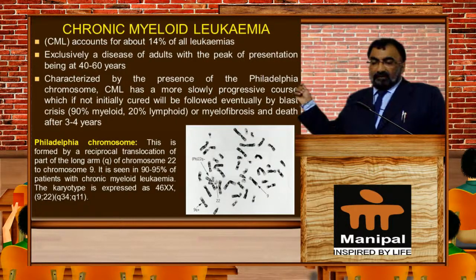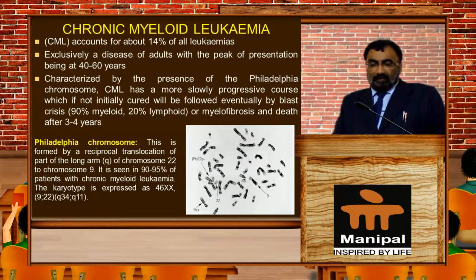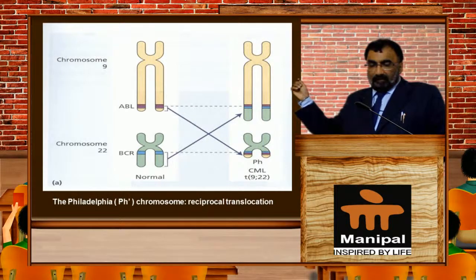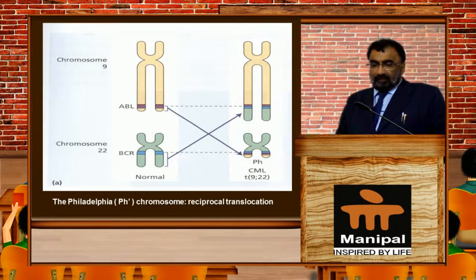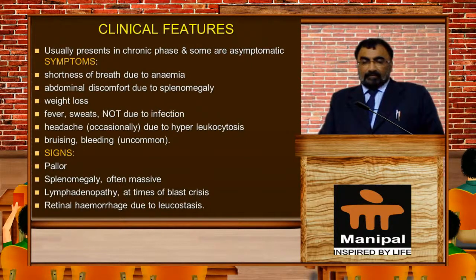The Philadelphia chromosome is formed by reciprocal translocation of the long arm of chromosome 22 to chromosome 9. As shown in the picture, the short arm of chromosome 22 is replaced, and you can see the Philadelphia chromosome in the bottom right. Chronic myeloid leukemia usually presents in the chronic phase, and some patients are asymptomatic.